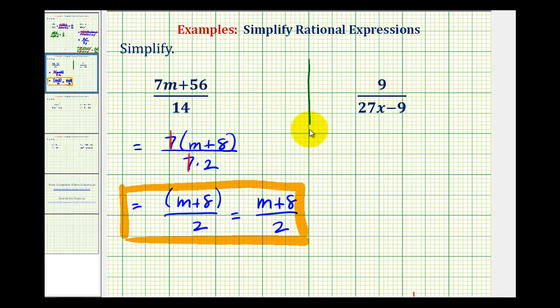Looking at our second example, let's start by factoring the denominator. Again, we cannot simplify across this subtraction. So we cannot simplify the nine and the 27 or the nine and this nine. So looking at the denominator, 27 and nine do share a common factor of nine. So we can factor nine out, leaving us with the quantity three x minus one. Again, notice if we distribute, we still have 27x minus nine. And we'll leave the numerator as nine. And in this form, we can simplify these nines and number nine simplifies to one over one. So the simplified expression can be written as one over the quantity three x minus one.